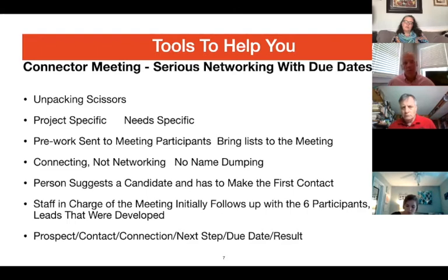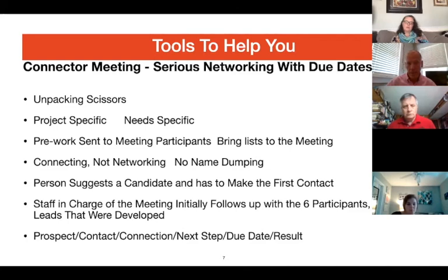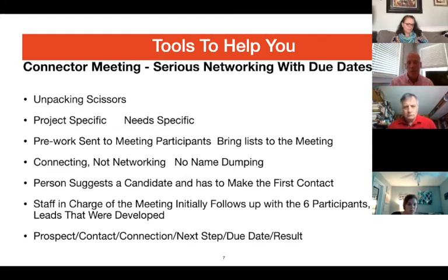The staff member in charge of the meeting follows up with participants and with the leads that develop. How we record this is with a simple Excel spreadsheet: prospect, contact, connection, next step, due date, and result. For example, the prospect is Bill Thompson, the contact is Frank Cannon, the connection is that Frank and Bill play basketball every Wednesday, the next step is that Frank is going to talk to Bill next Wednesday, the due date is next Thursday, and then you follow up and get the result. It's super simple, but very effective.